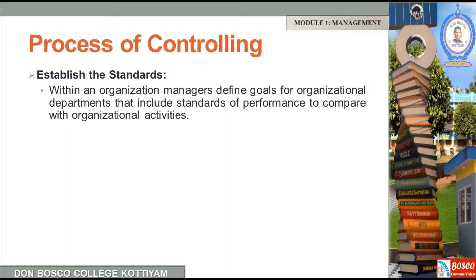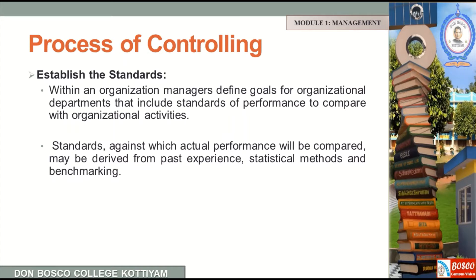For example, in a college, a common uniform is a standard. It is a standard of uniform — a proper uniform is the standard. If we control whether the teacher and students follow it, that is the controlling function. In case there is a deviation from the standard, you can control it. Standards against which we compare the actual performance may be derived from past experience, statistical methods, and benchmarking.